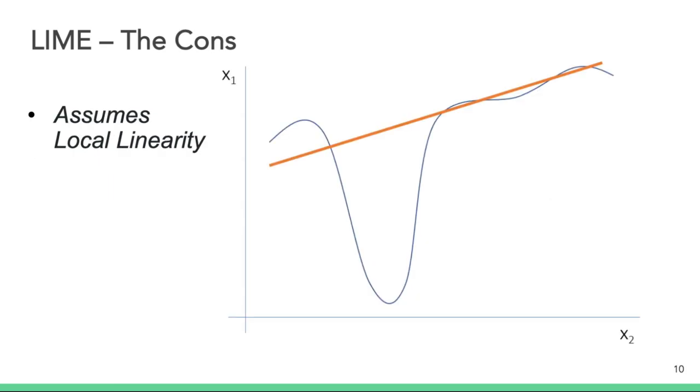We talked about the pros. Let us discuss the cons or limitations of LIME. The first limitation we should note is that LIME assumes local linearity. Recall that LIME approximates the model locally with linear models, so it is not designed to explain models that are not linearly local.